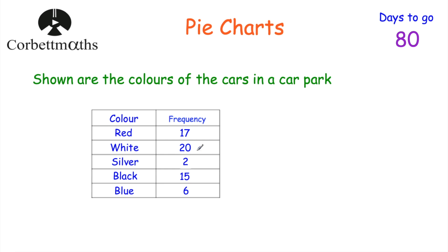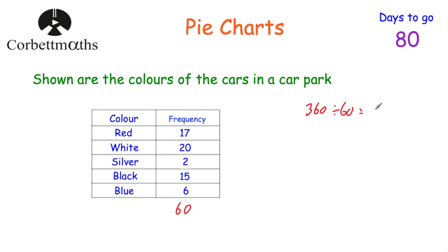To work out the size of each angle, I'd add up the frequencies. The question doesn't say how many cars there were, so we need to add them up: 17 plus 20 plus 2 plus 15 plus 6 equals 60. So there are 60 cars in the car park. Because a pie chart is 360 degrees, we do 360 divided by 60, which equals 6. So each car is worth 6 degrees.